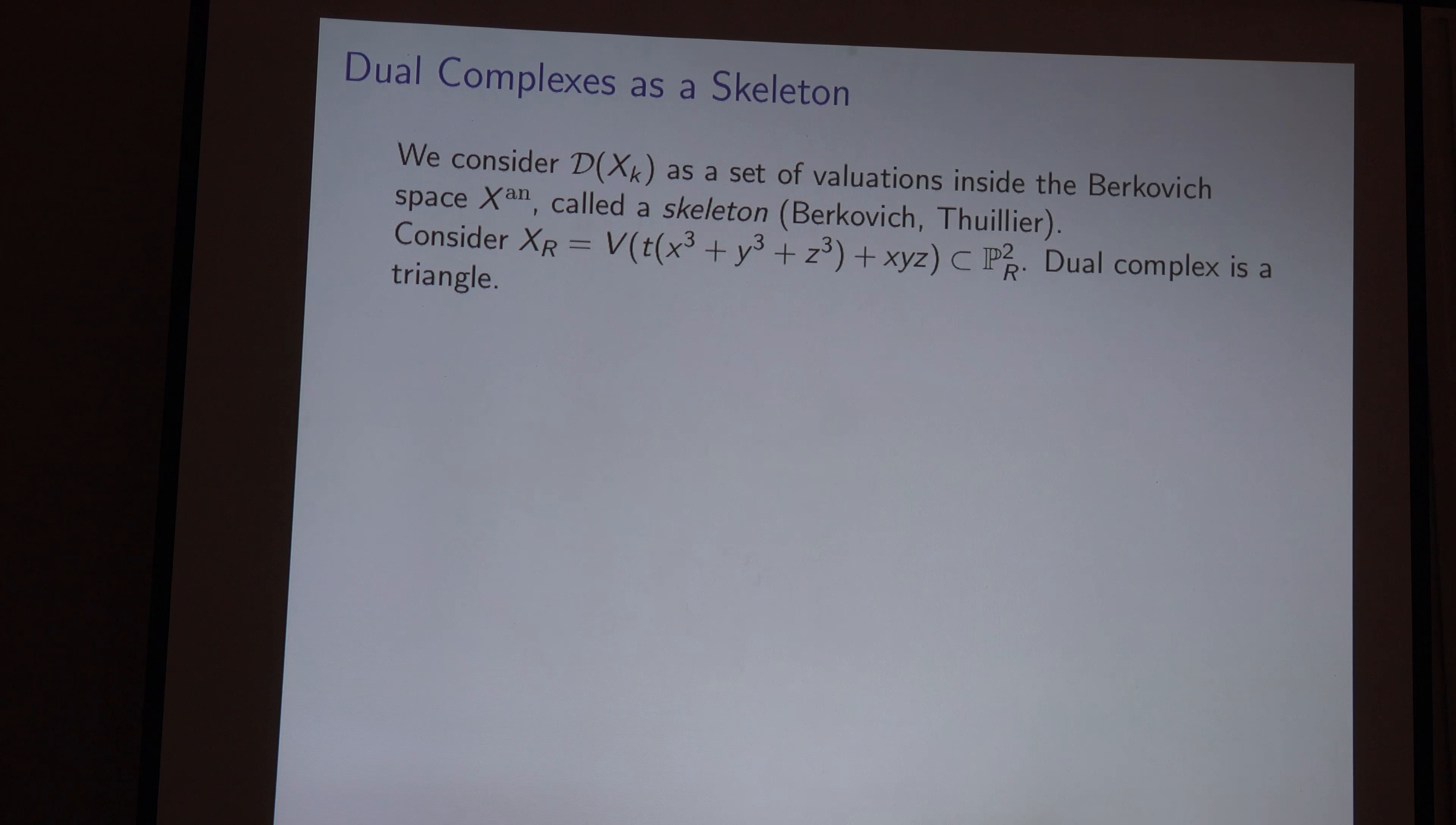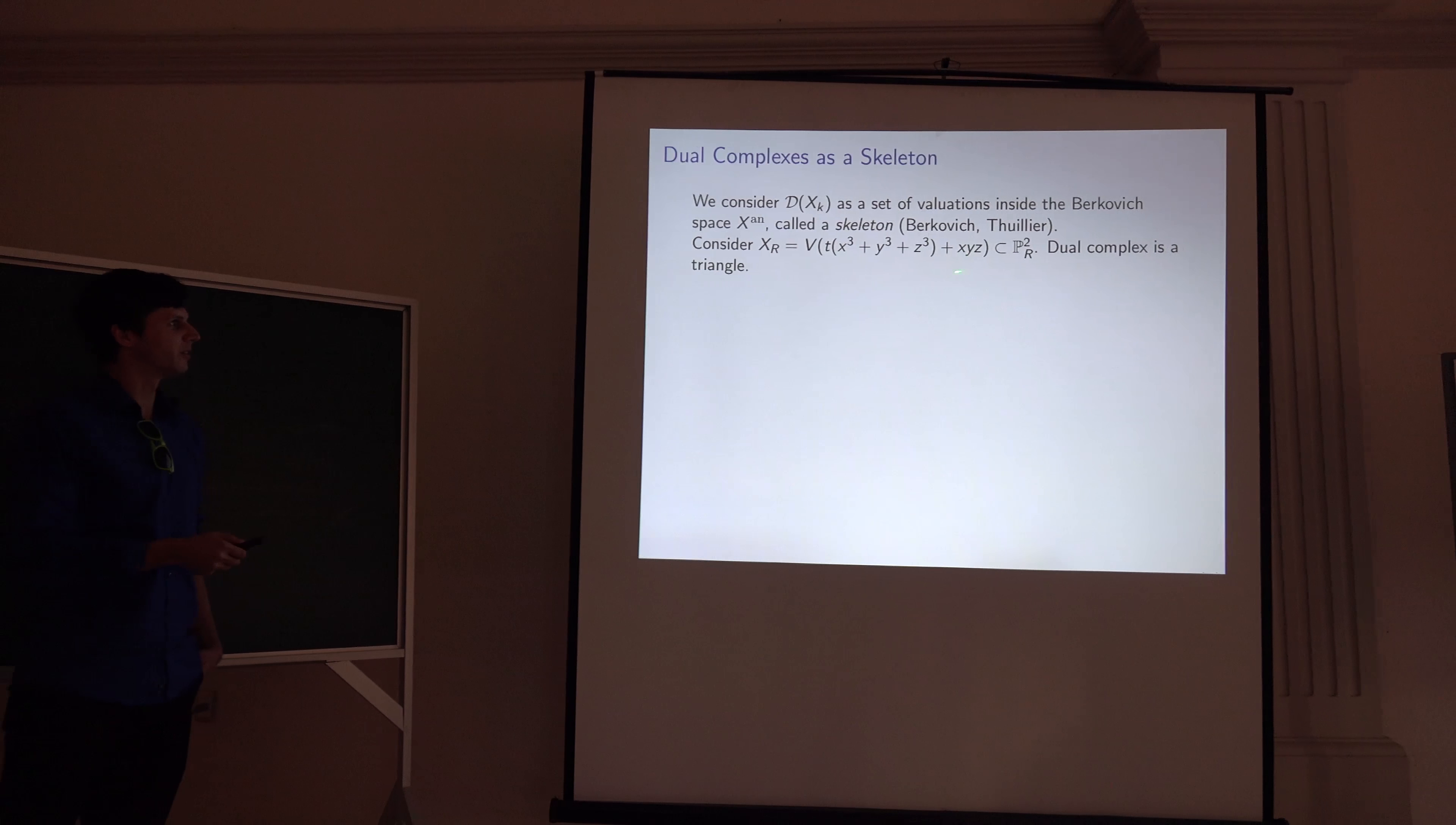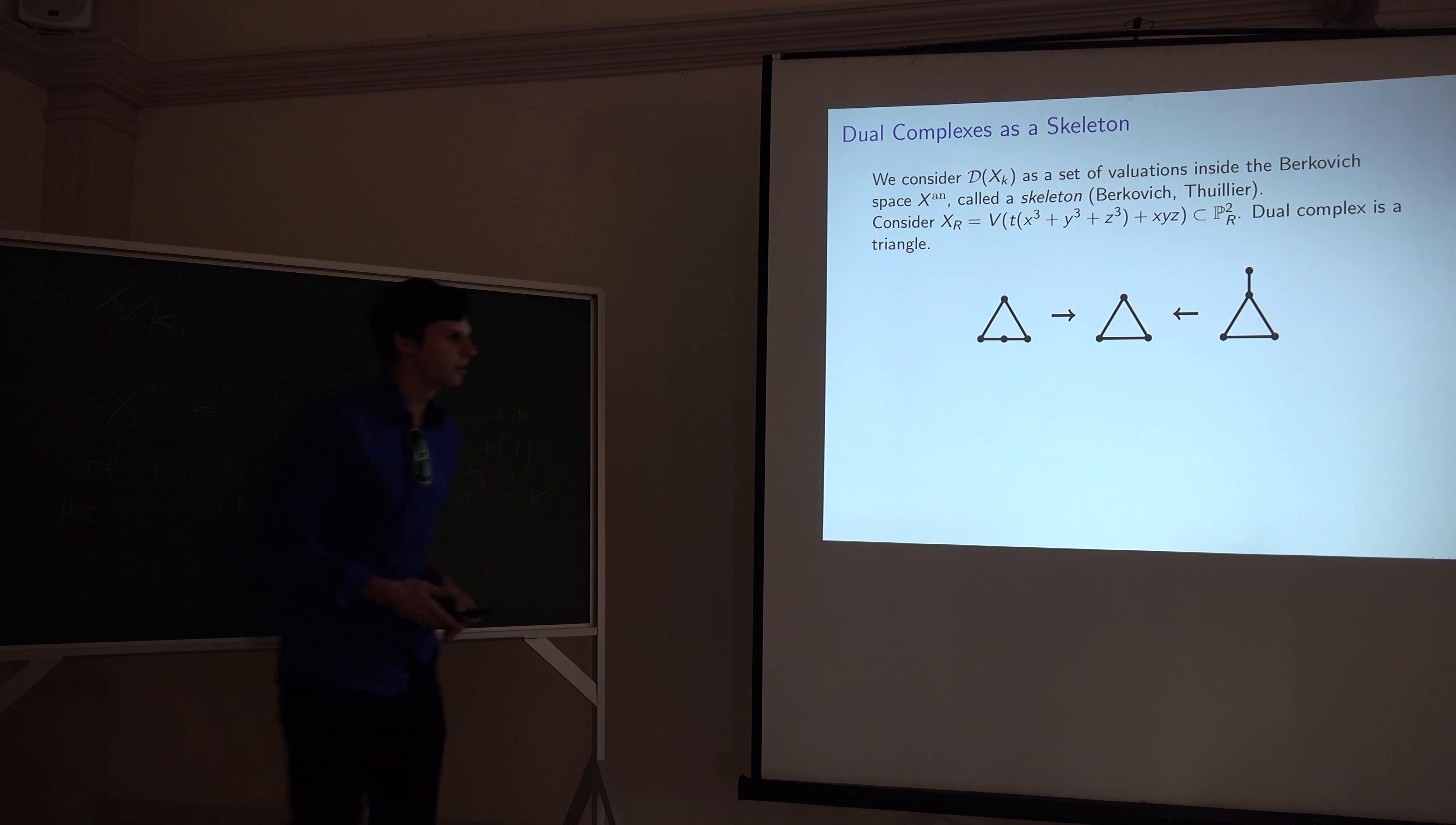Okay, so the example I want to consider is if I take the vanishing of this equation, so I have t times the Fermat curve plus the coordinate hyperplane, that's x, y, z. So this is a cubic equation over r, and over k, I get something which is a genus 1 curve, which is smooth. But over r, it's not smooth because I have, you know, some normal crossings happening in the special fiber. And in the special fiber, I just get the coordinate hyperplanes, and, of course, their dual complex is a triangle. So now I want to think about, okay, how this changes in the birational modification. Because I can, of course, do things like make blowups to get a new R model while keeping my model over k the same. So how does that work?